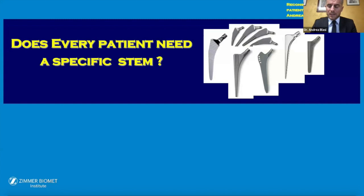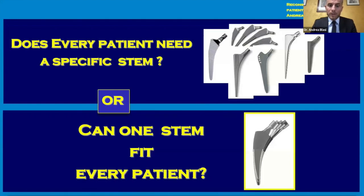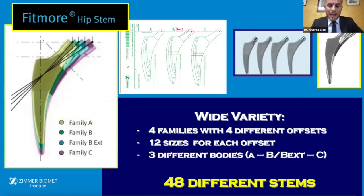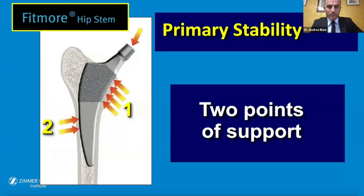Does every patient need a specific stem, or can one stem fit every patient? This is a challenge we will discuss. The Fit More stem has a wide variety — four families with four different offsets, 12 sizes for each offset, and three different body families: A, B Extended, and C. In total, we have 48 different stems. The Fit More stem is a short stem; primary stability is obtained through two points of support: the medial cortex of the neck and the lateral cortex of the femur.